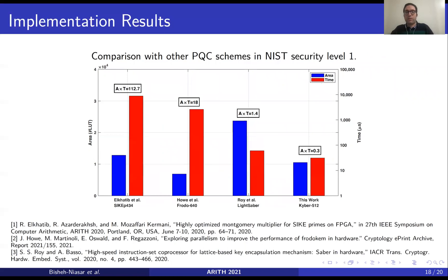For comparison with other post-quantum cryptography schemes, we compare our design at NIST security level 1 with the NTRU, FRODO, and SABER schemes. As one can see, our result is the fastest design compared to these other post-quantum schemes and achieves a better area-time product compared to them.